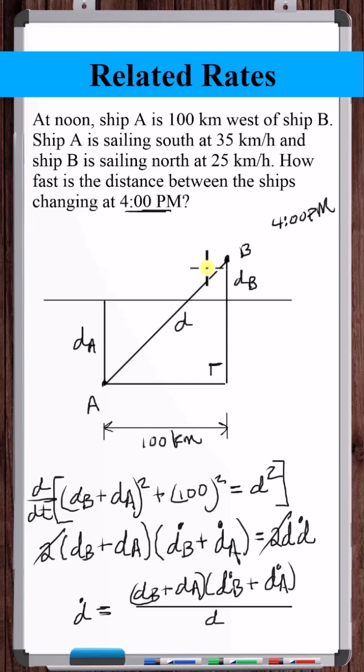So the rate of change of D-A is positive. This triangle is getting bigger. D-B is also increasing. This triangle is getting bigger. However, at 4 p.m., there's one unique value of D-A and one unique value of D-B and one unique value of D.